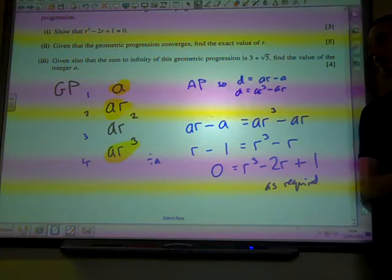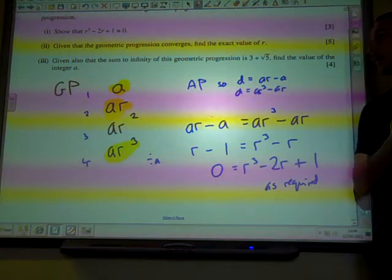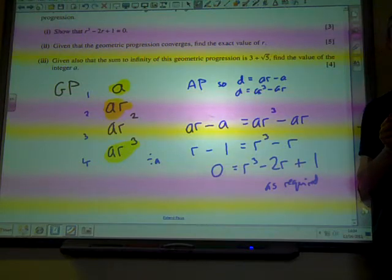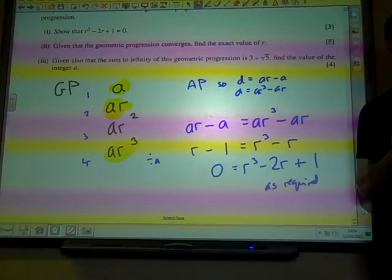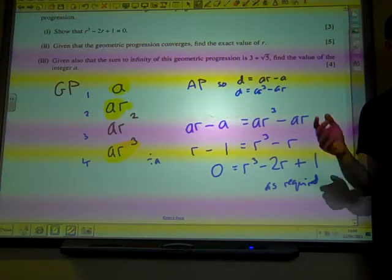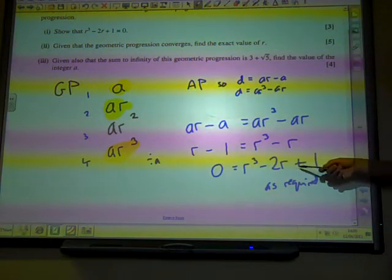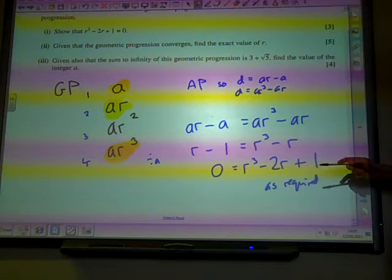Now, given that this geometric progression converges, find the exact value of R. If it converges, then R is between minus 1 and plus 1, and it satisfies this equation here. This equation must be true.